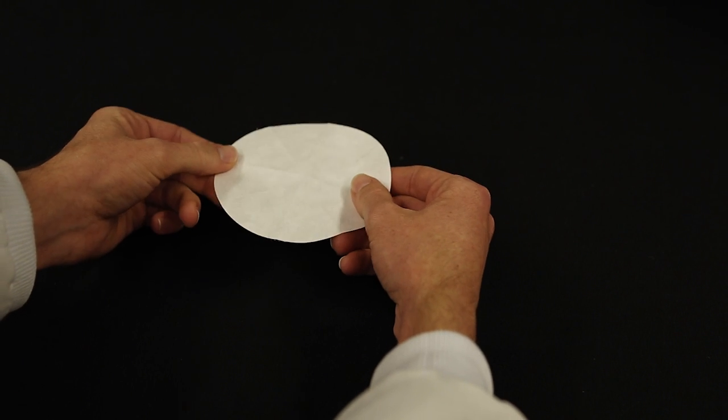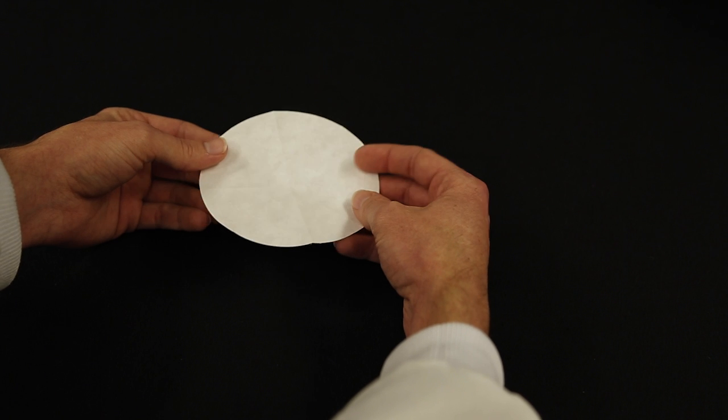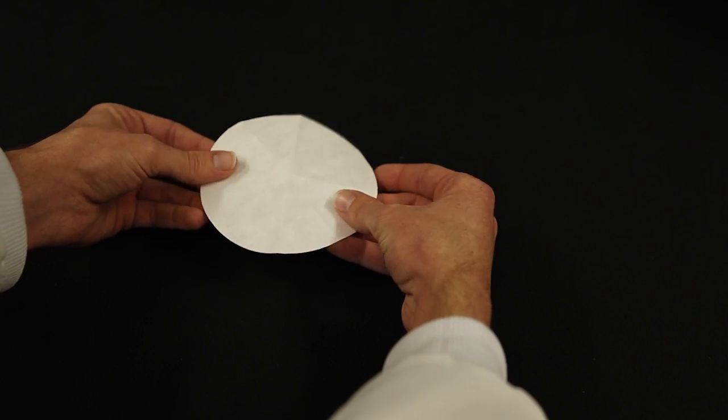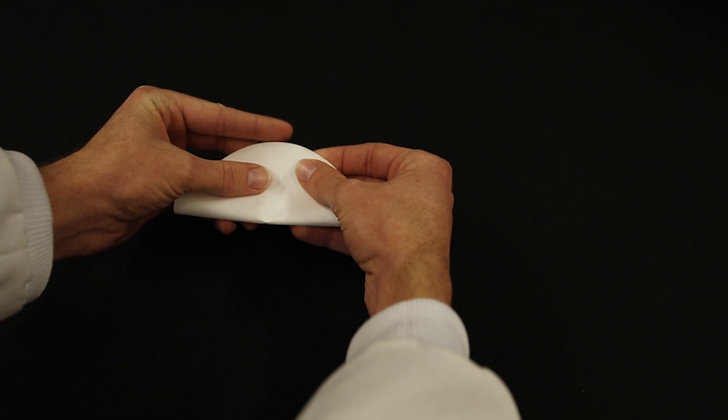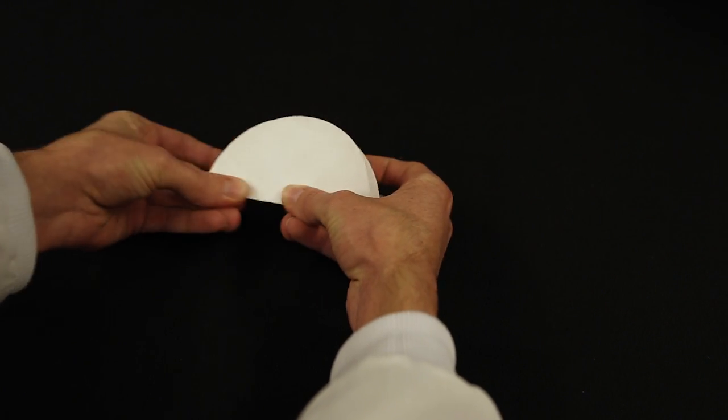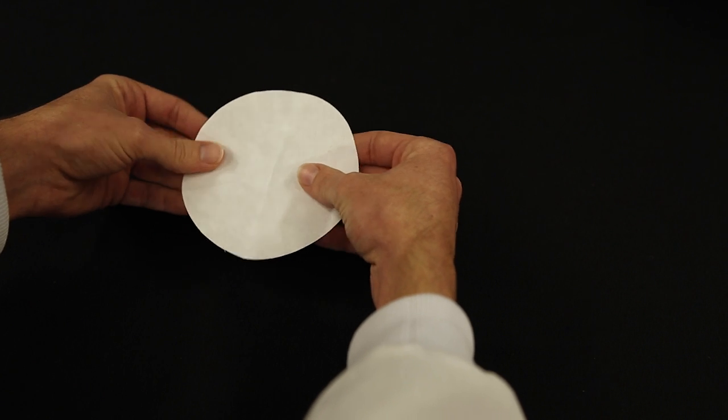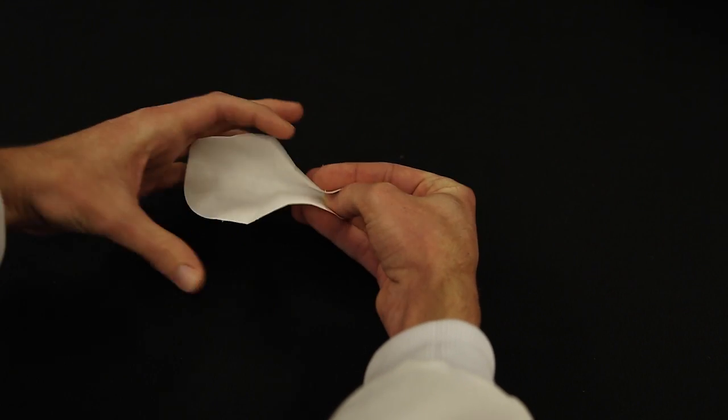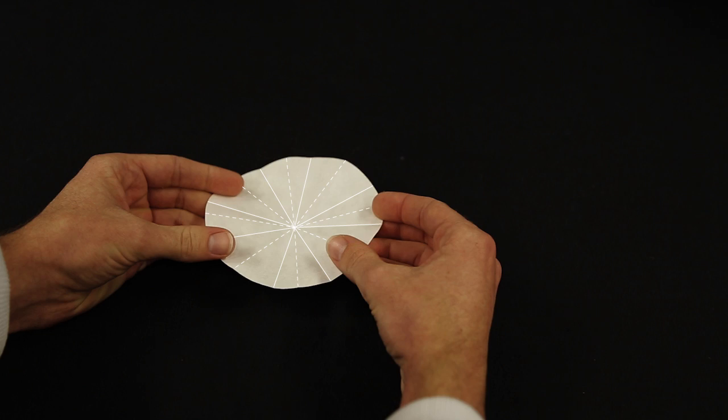Now turn it over and you will do the same thing on the other side except that you will line and fill in the spaces between the pleats that you just made. Fold it in half. Line the creases and you will do that a total of four times with alternating creases. This will give you four pleats on each side.